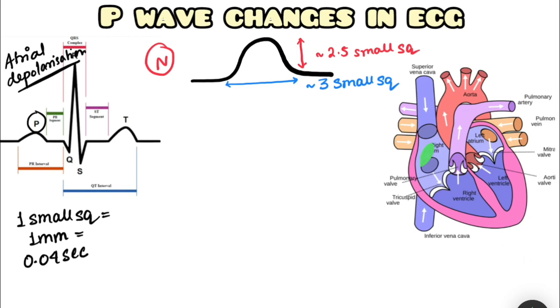We know that the natural pacemaker is situated in the SA node of the right atrium, and hence the right atrium undergoes depolarization a bit earlier than the left atrium. The right atrial depolarization occurs before left atrial depolarization.